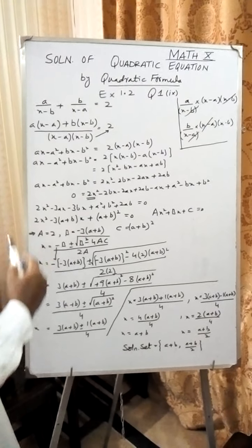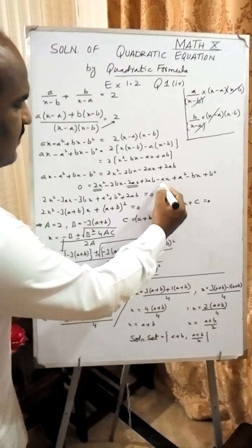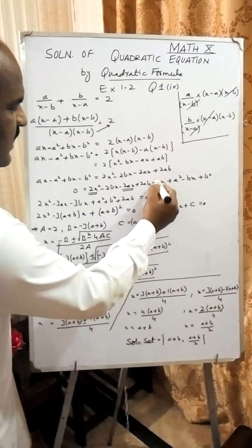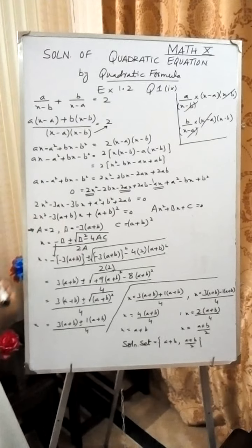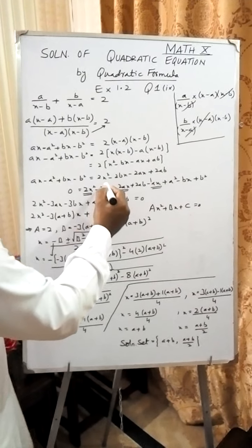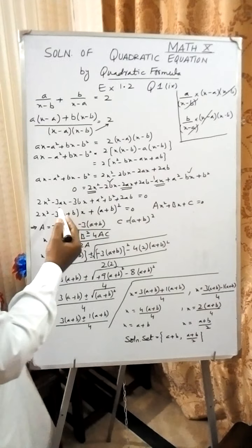When these will be shifted, the sum will be 2x². Then look here: this is -2ax and this is simply ax, minus ax, meaning -1 times ax. So -2 and -1 will make -3ax. Similarly, -2bx and then -1 times bx will make -3bx.